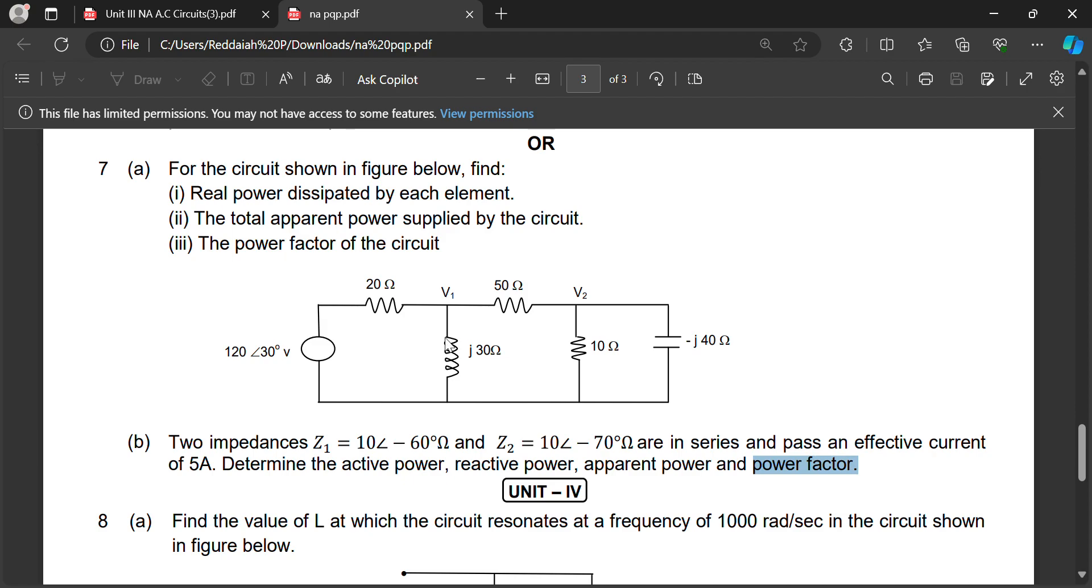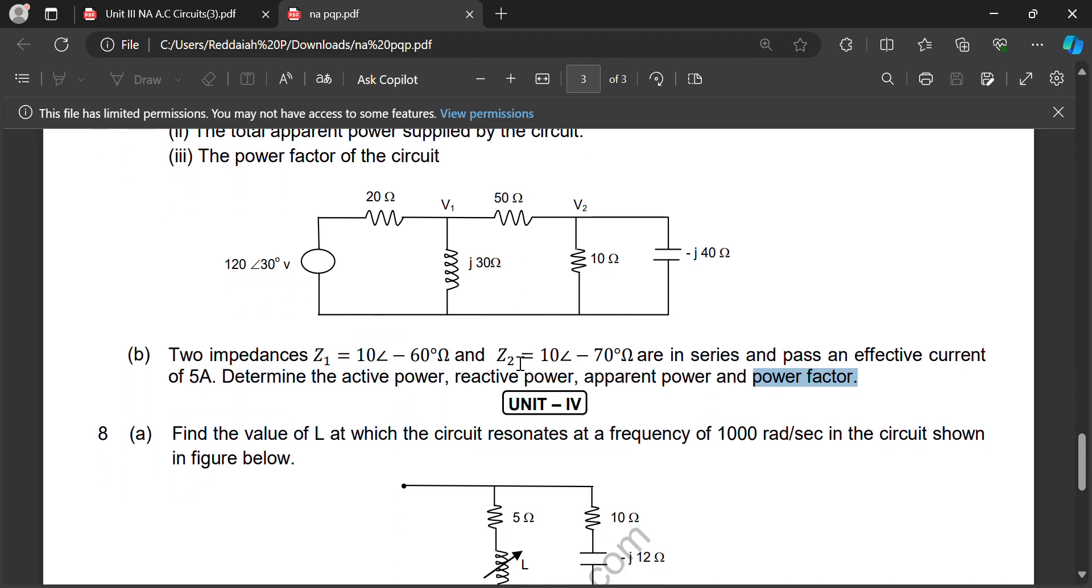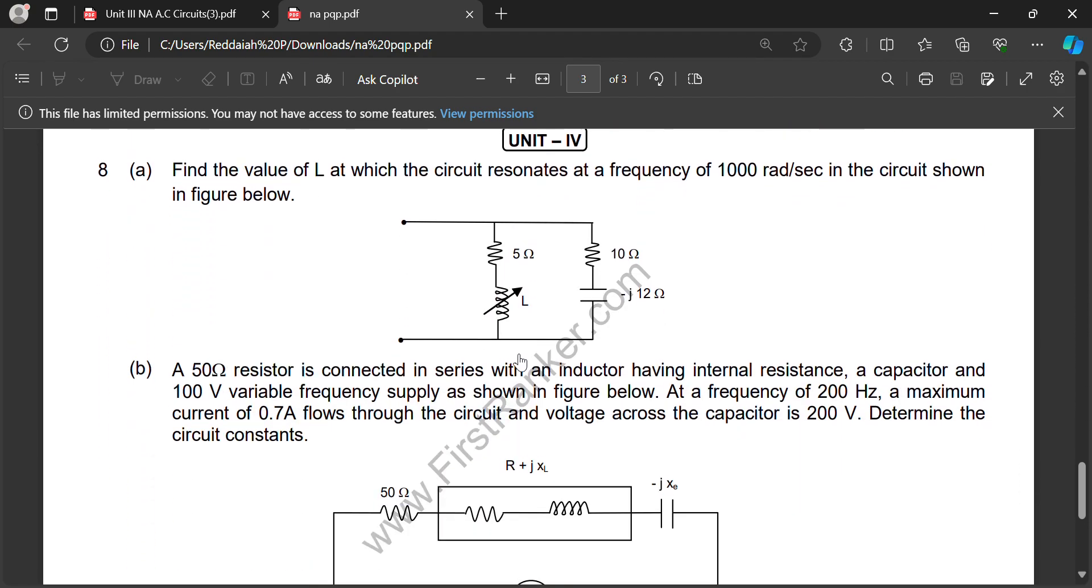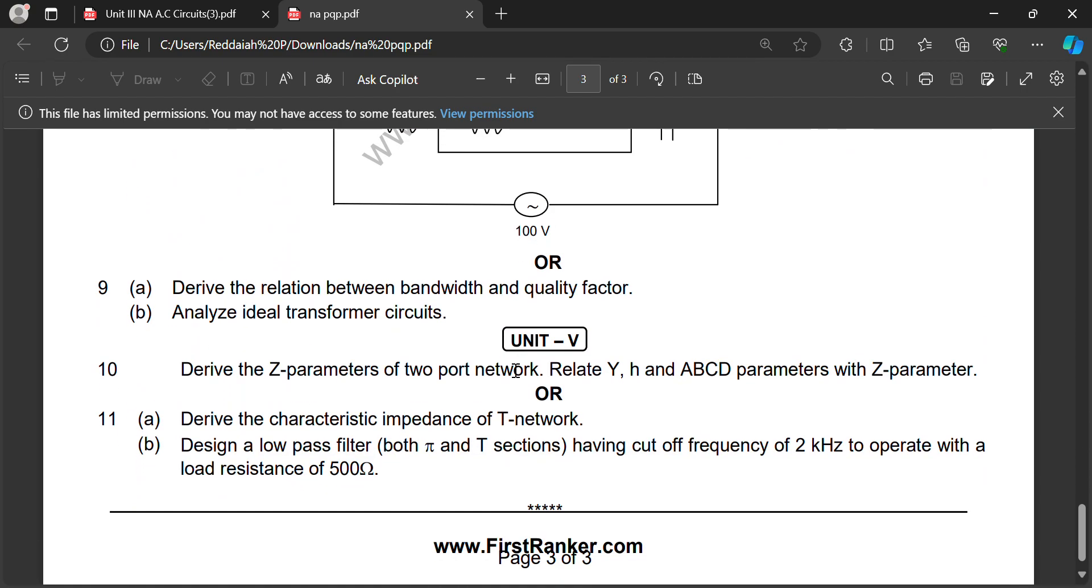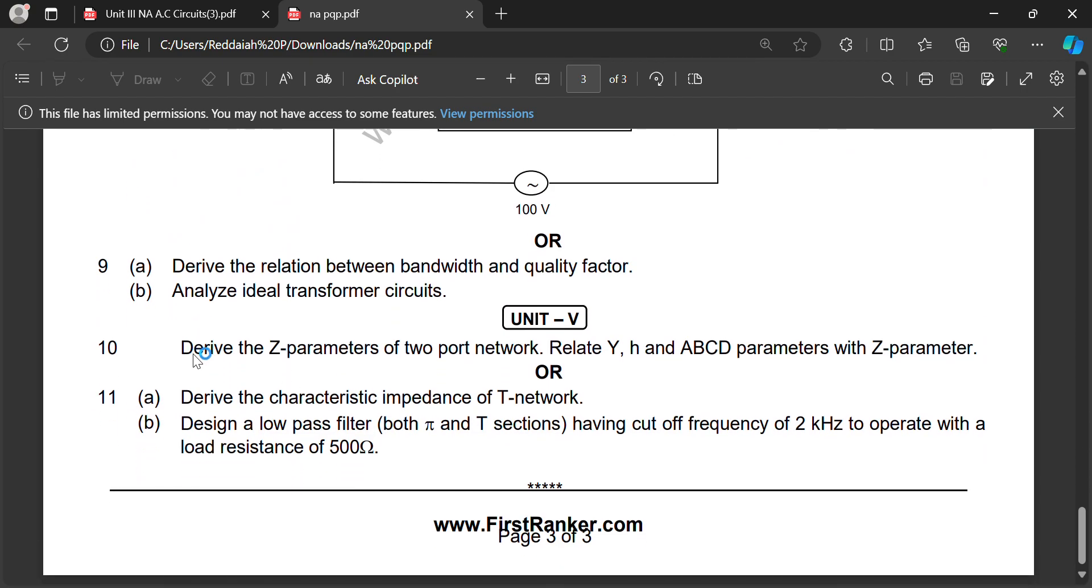From Unit 3 you can easily get 10 marks. Unit 4 also, resonance frequency and coupled circuits, you will get easily 10 marks. From Unit 5 it is very easy to get 10 marks. That is 30 marks in third, fourth, fifth unit. And first unit again you will get easily 10 marks. Totally 40 marks, and 60 marks, a total 70 marks you can easily get.